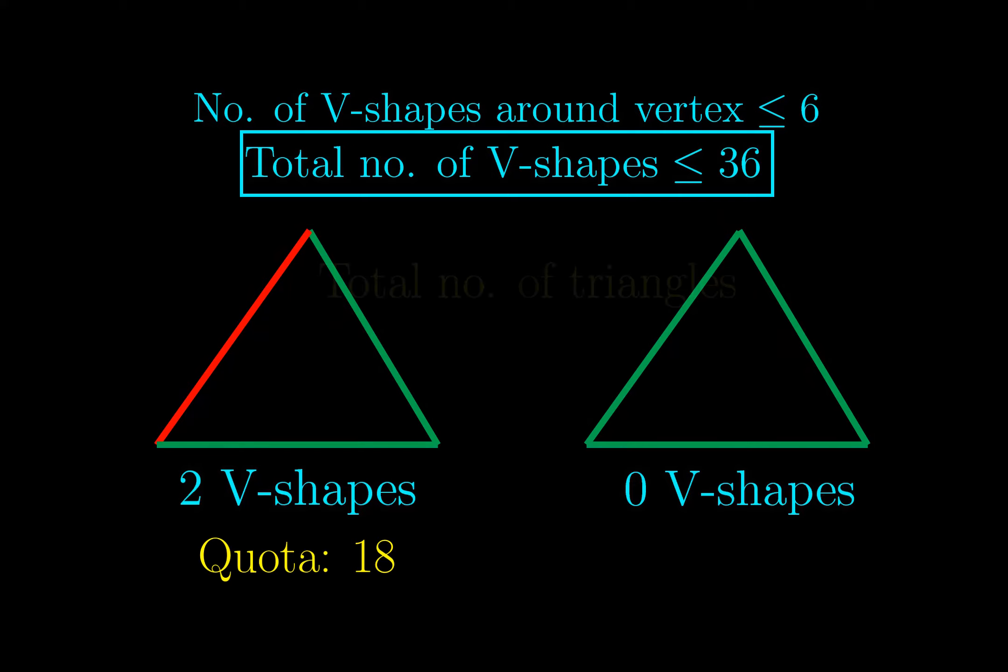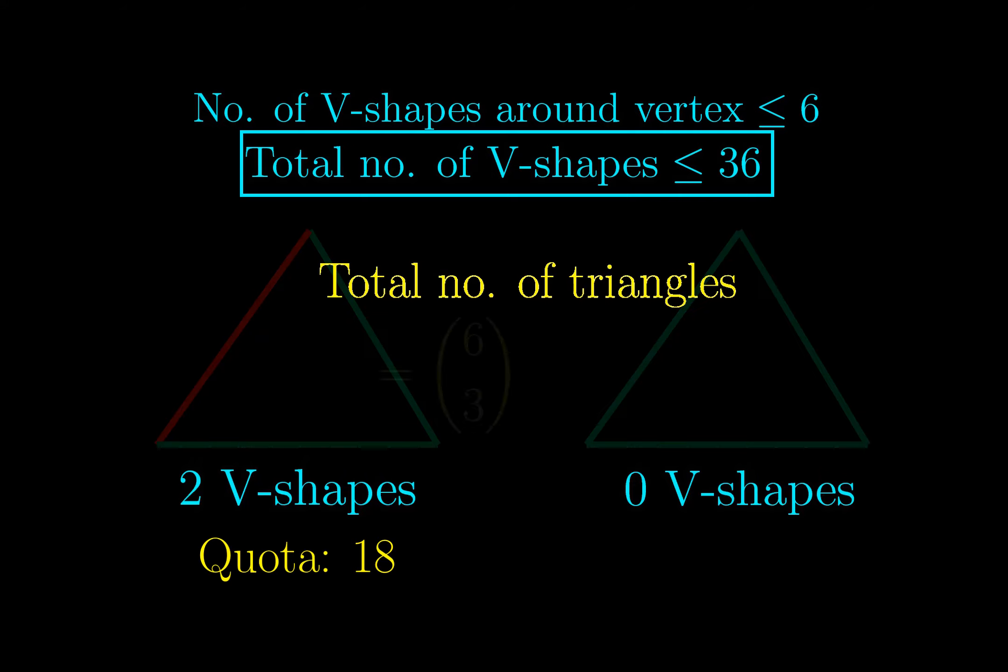However, the total number of triangles in the 6 vertex graph is 6 choose 3, because we can freely choose the 3 vertices to form a triangle, and this is equal to 20. So altogether, we show that there are actually at least 2 triangles with 0 V shapes, or the red or green triangle that we want.